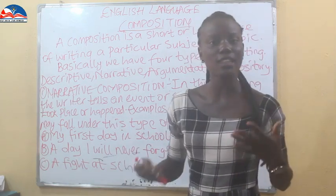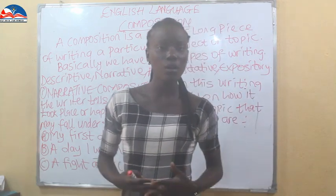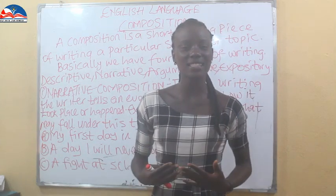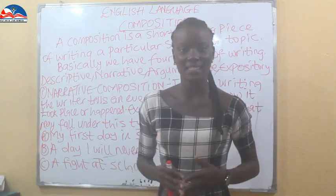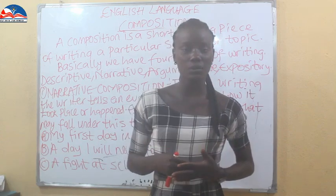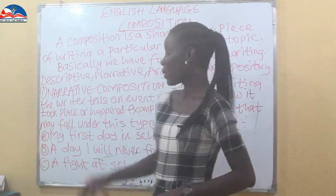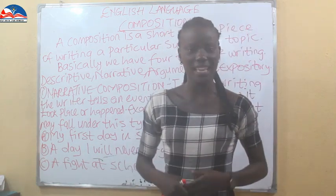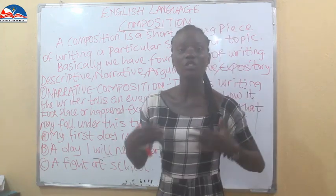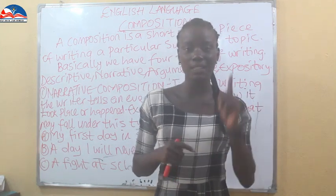Examples of narrative composition include: 'My first day at school' — you are going to explain your experience at school, what you witnessed, what happened to you. You are narrating the events that occurred on that day. Another example is 'A day I will never forget,' which is also a narrative composition because you are narrating what happened to you on that memorable day.